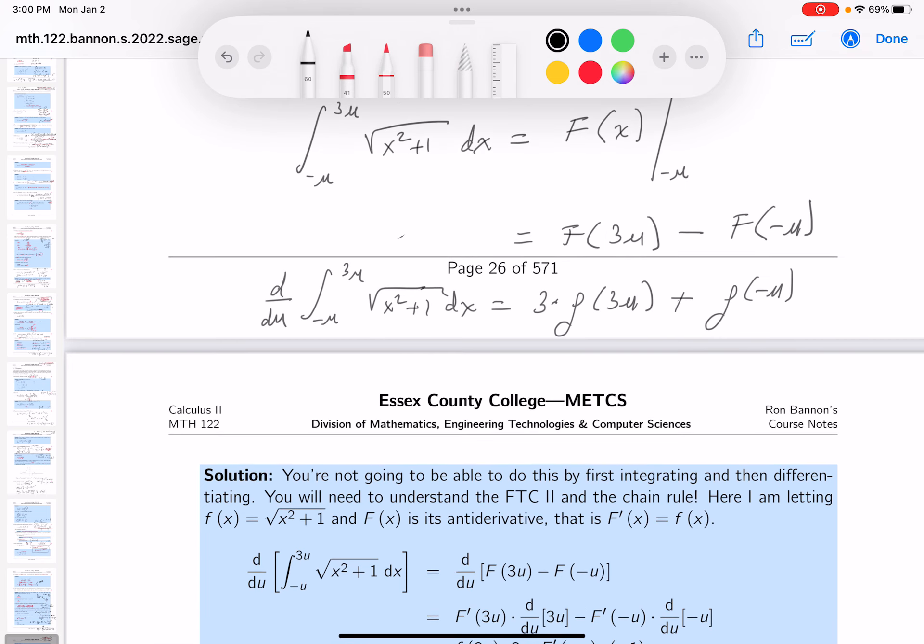So do I know what f is? I do. f is this thing over here, it's lowercase f. So we write this down: you get 3 times the root of, well that's going to be 9, 9u squared plus 1, plus the root of u squared plus 1. Put a little box on that.